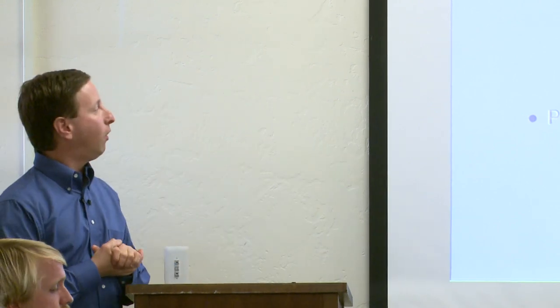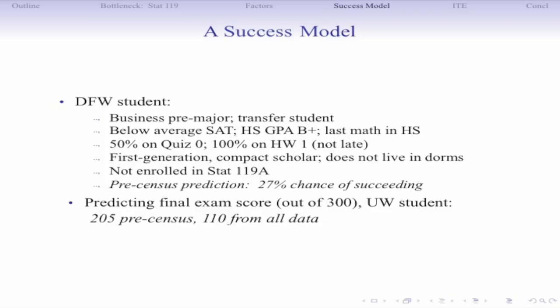Here's an unofficial withdrawal student. We can predict final exam score: based on pre-census data we predicted this student would get 205 out of 300 — roughly a C-plus — but based on the whole semester's worth of data they were predicted to get 110 out of 300. The idea is we can follow the student throughout the semester: after week one predicting 250, after three weeks 200, after four weeks 175. This is a student at risk of losing engagement or withdrawing — try to grab them back.